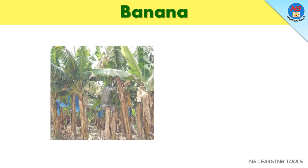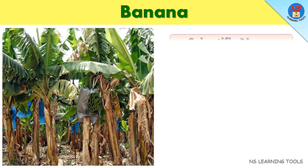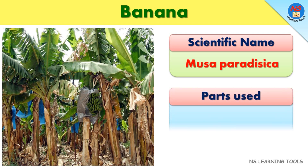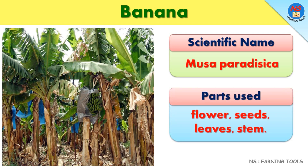Banana. Scientific name: Musa paradisica. Parts used: Flower, seeds, leaves, stem.